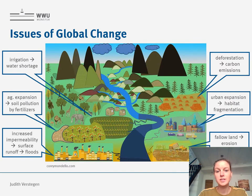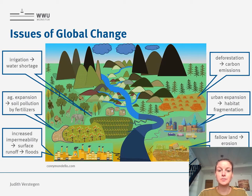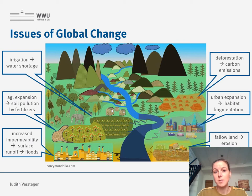We are currently facing global change which leads to several issues. In this figure you see some examples of that. For example, irrigation can lead to water shortage. Agricultural expansion can lead to soil pollution. The increased impermeability of the soil because of buildings and roads can lead to a higher amount of surface runoff and thereby an increased frequency of flooding.